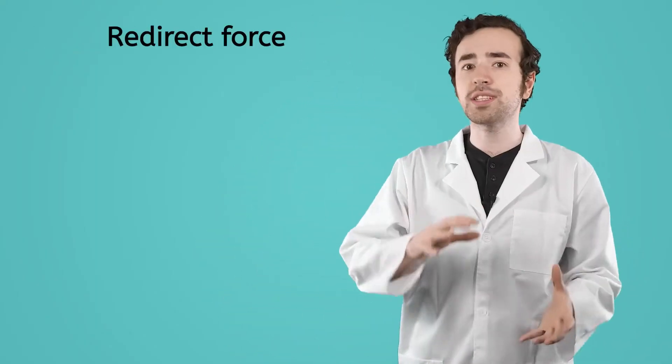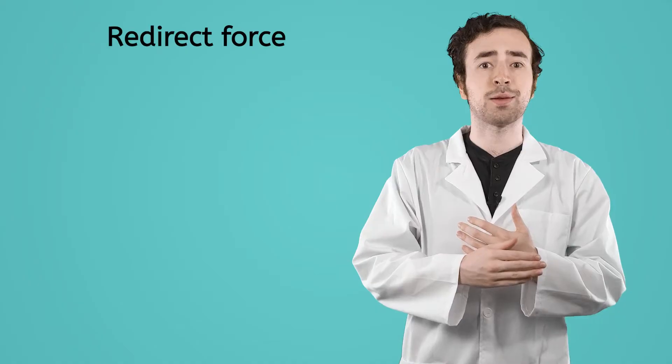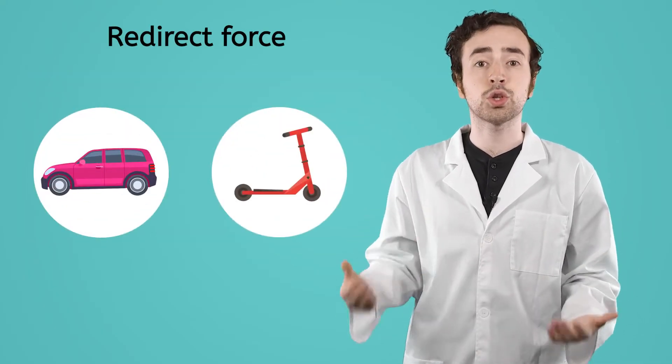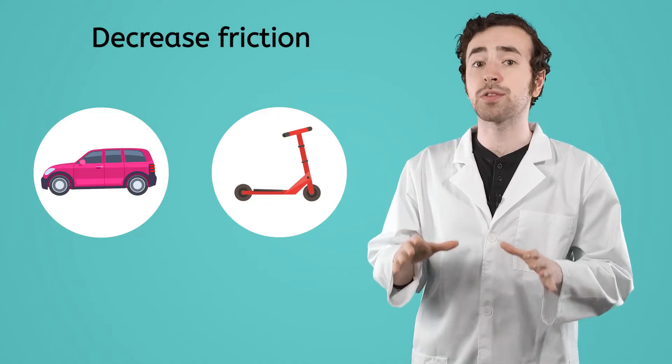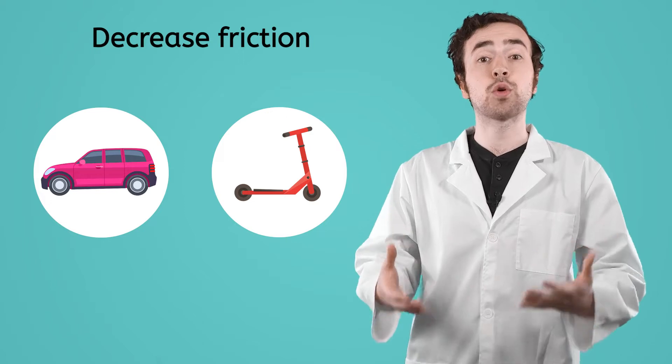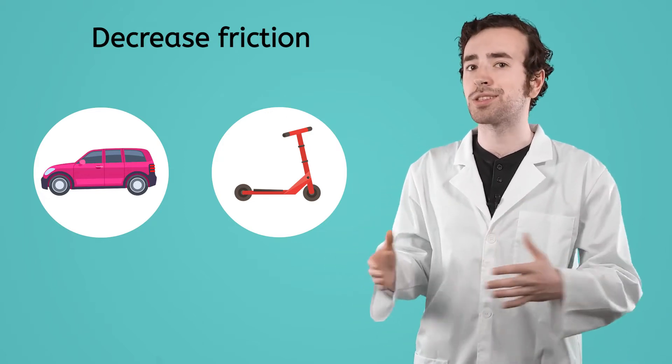Can you think of any other places where wheels and axles are used? Pause the video now to jot down your thoughts in your guided notes. Wheels and axles are probably so common because we use them for all sorts of different things. Sometimes we use wheels and axles to redirect force, sending it in directions that would be hard for us to do ourselves, like with the windmill. When wheels and axles are used in transportation, like in cars and scooters, they actually decrease the amount of friction between the load and the ground. Less friction means less force required to move the object over a long distance.